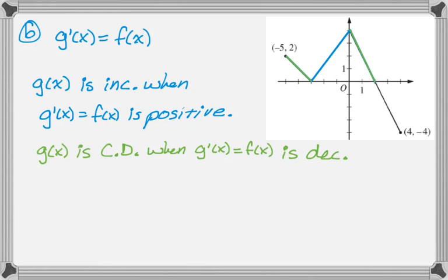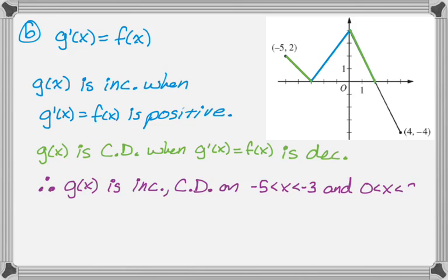I'm not sure you can actually see that. Probably can. Anyway, so combining that information, therefore g of x is increasing and concave down on the intervals negative 5 to negative 3, and 0 to 2.